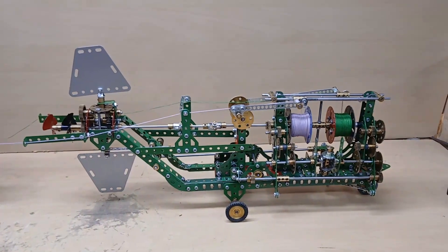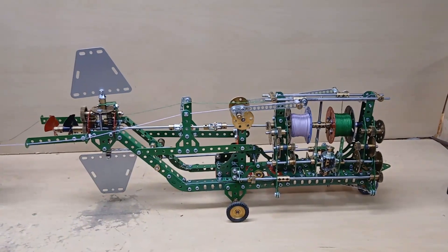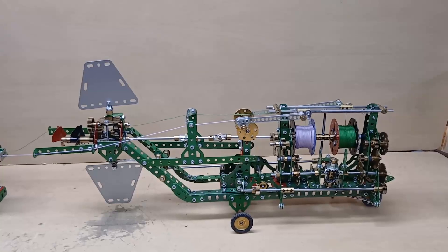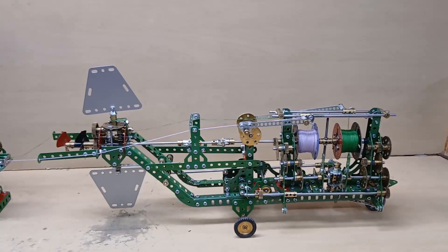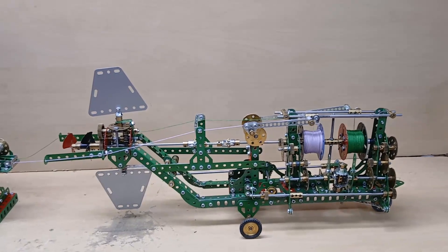This is the Brennan torpedo, a very interesting machine. It was used to defend ports and harbors as it was tied to the shore by a couple of cables.